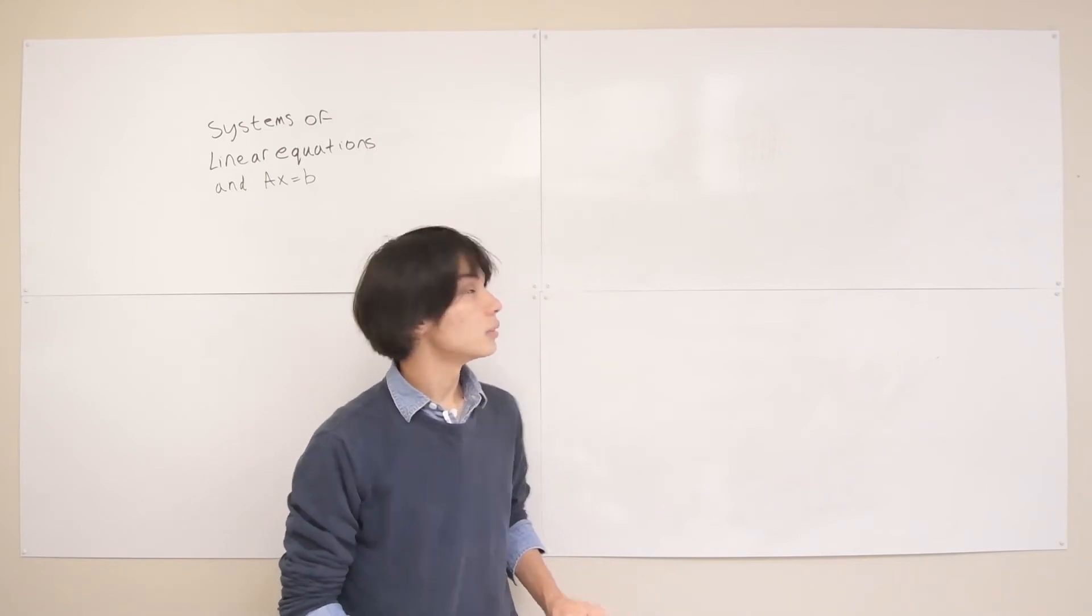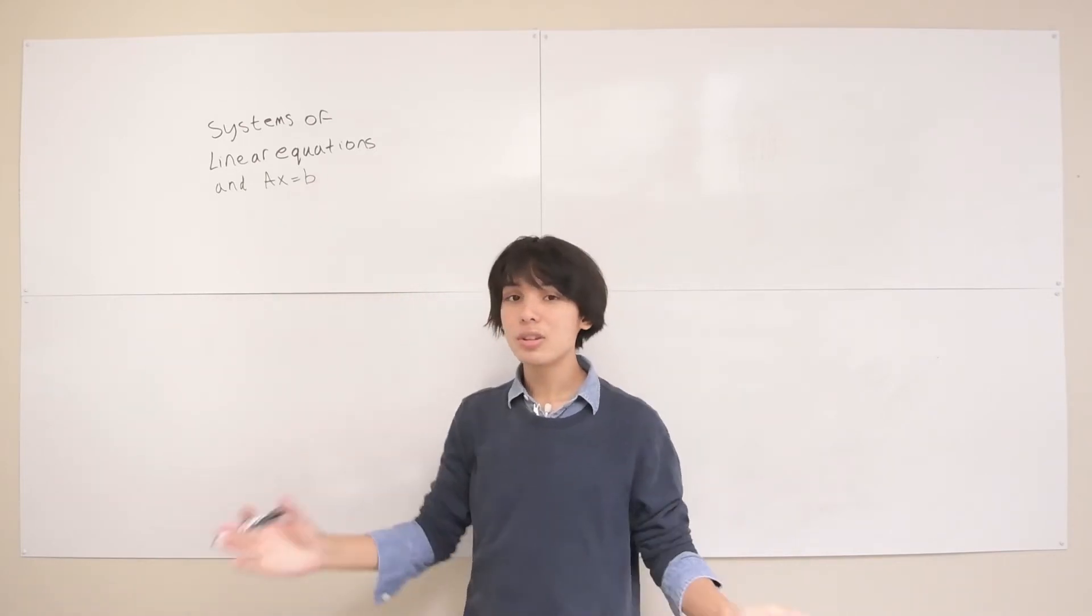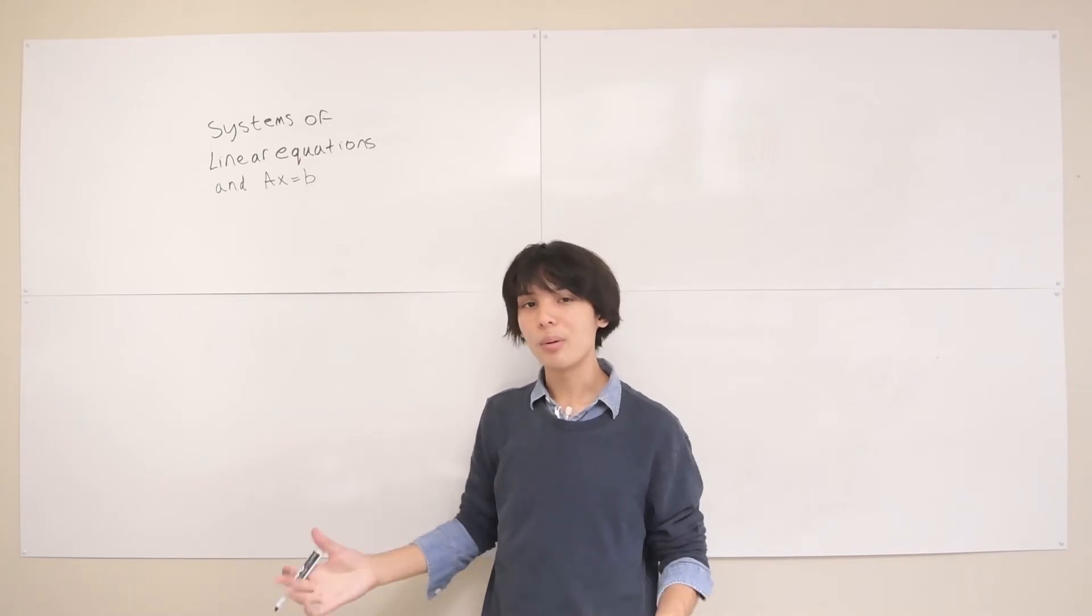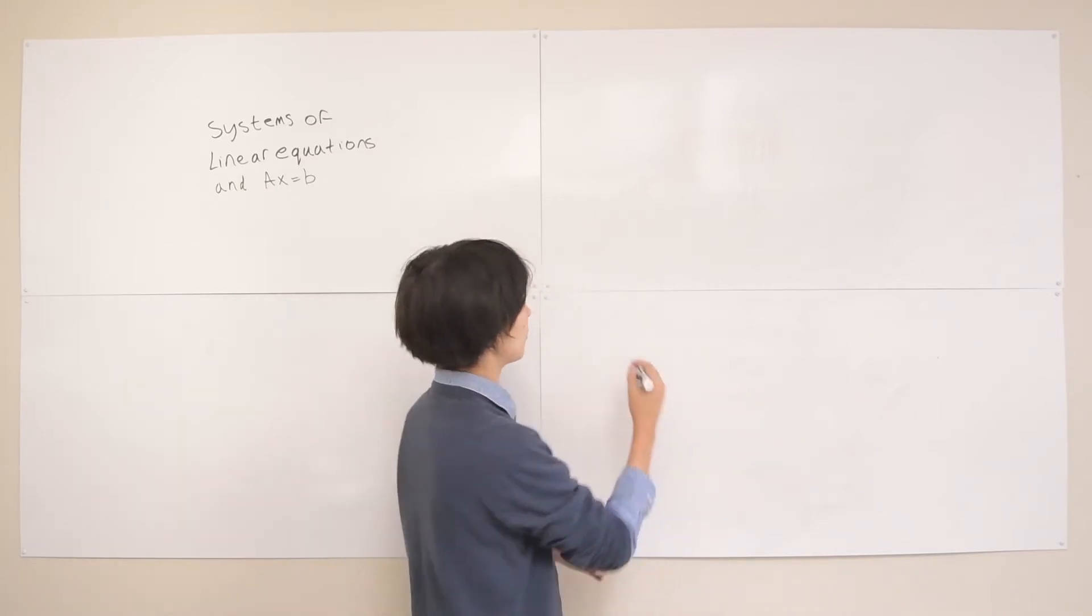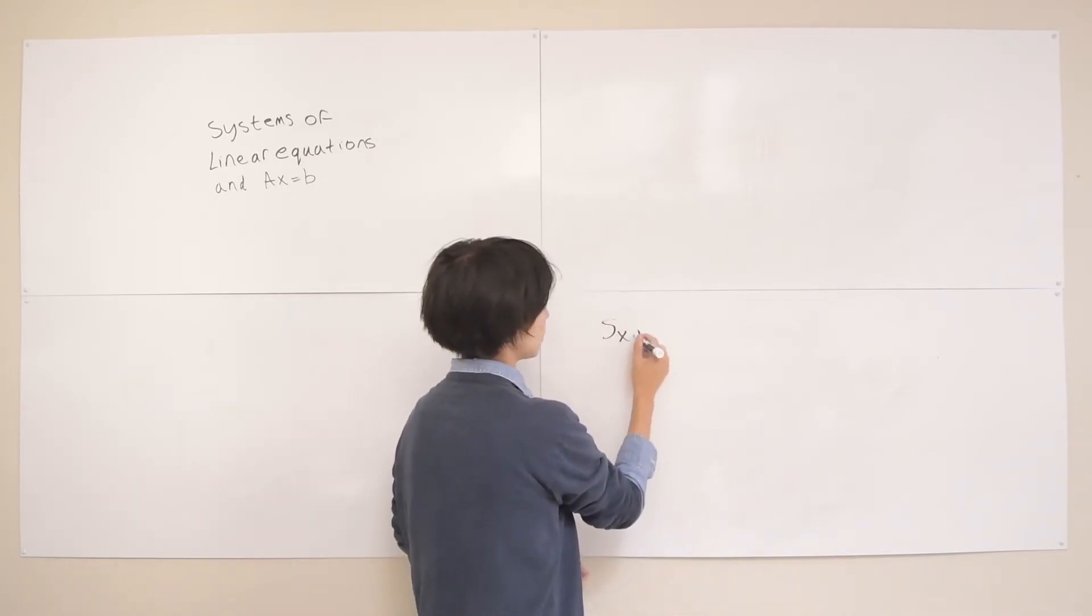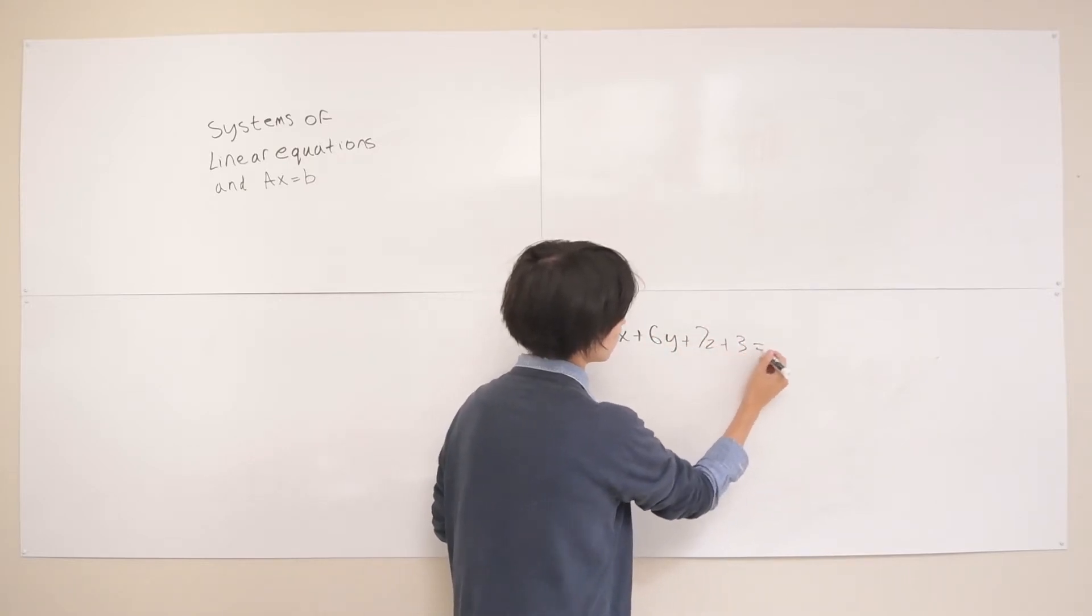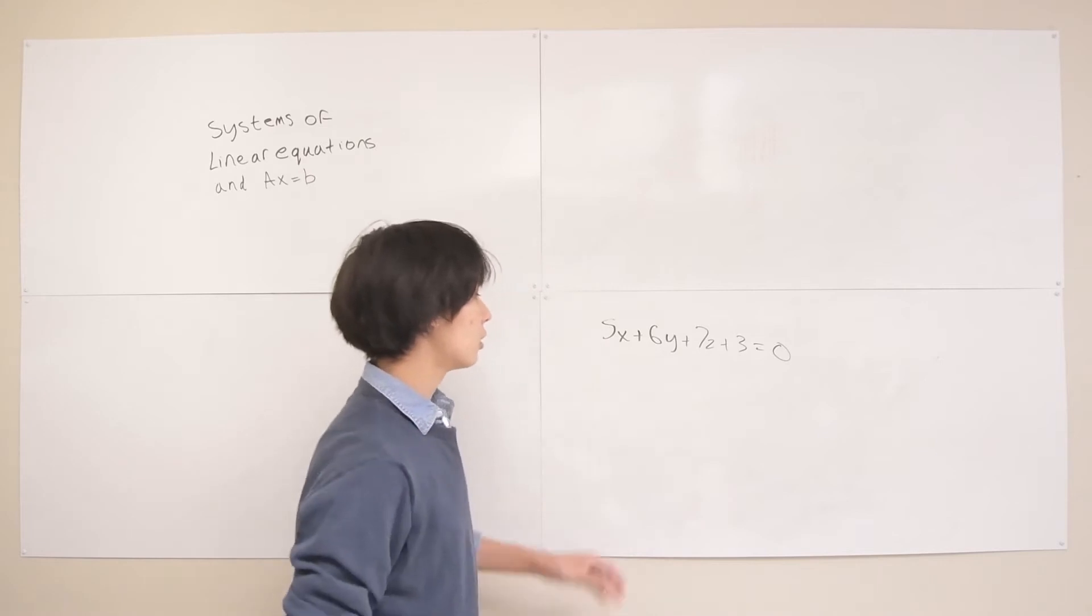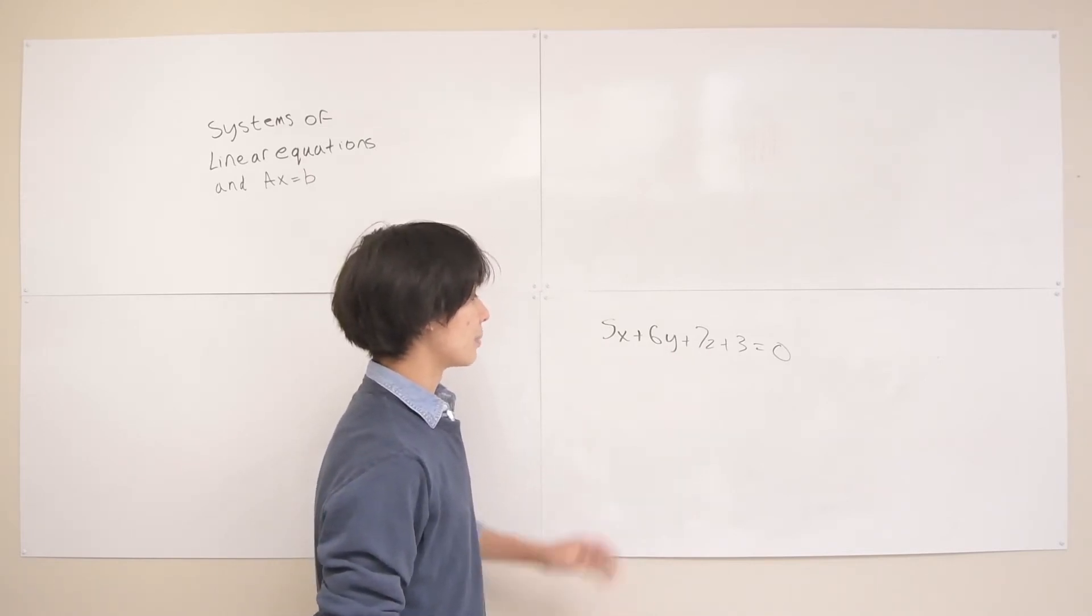So first we'll start off with linear equations. Linear equations as you know is any equation where there's no variables raised to any power greater than 1. So an example would be 5x plus 6y plus 7z plus 3 equals 0. That's a linear equation right there because all three of your variables are simply raised to the power of 1.